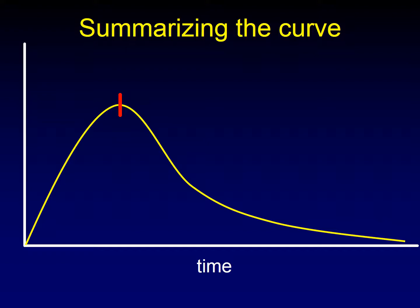The first thing we're going to do is measure where the curve meets its peak — the top of the curve. We're going to measure the amount of time it takes from point zero, when we inject the contrast, to that point. That time is called the time to peak, and that's one of the parameters we're going to use. There are other ways to measure time — you can measure the average transit time — but in some way you're measuring how long it takes for contrast material to get to the brain parenchyma. Time to peak is the easiest to demonstrate.